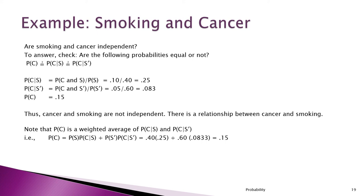The probability of C given not S is 0.05 over 0.60, which works out to 0.083 or 8.3% — if you're a nonsmoker, there's an 8.3% chance of dying of cancer. The simple probability of cancer is 0.15, a weighted average. Looking at all three: 15% in general, 25% if you're a smoker, 8.3% if you're a nonsmoker. Researchers would simply state that smoking and cancer are not independent — there is a relationship between the two.